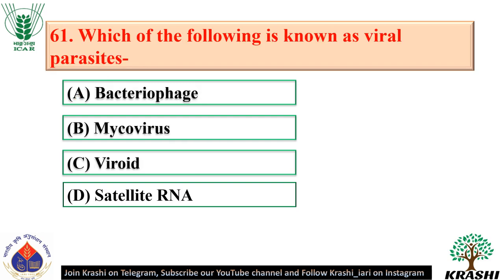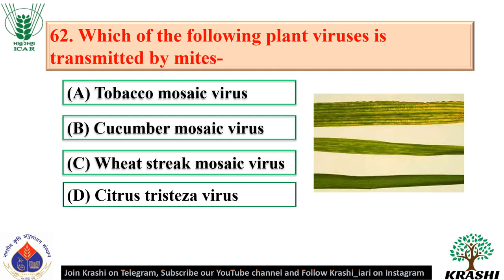Question number 60: Hypovirulence is due to the presence of double-stranded RNA mycovirus — option A. Hypovirulence is a symptom caused by fungal viruses and describes the reduced virulence of plant pathogenic fungi that are infected with these viruses. Question number 61: Satellite RNA is known as a viral parasite — option D.